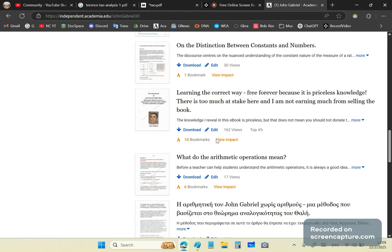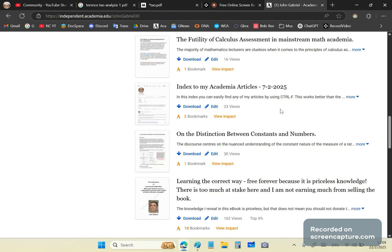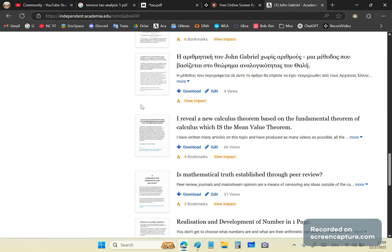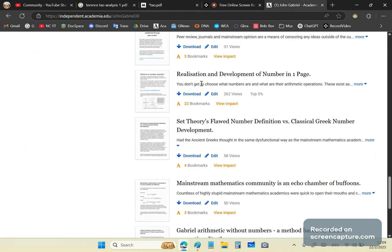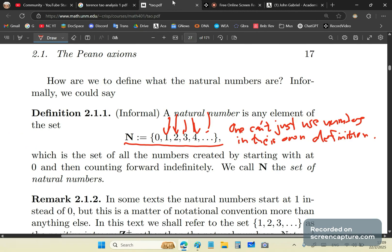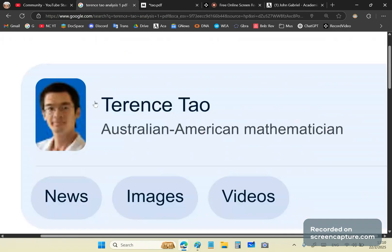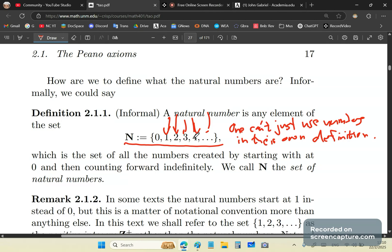Now, how is number realized? So what you'll do is you'll read this article, Realization and Development of Number in one page. It makes Tao, this little idiot look like the baboon that he is. And it's not his fault that he's an idiot. All his lecturers and advisors were idiots too. The whole of mainstream math academia is a stupendous pile of steaming crap. And they need to be fired, kicked out because none of them know anything about mathematics.